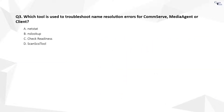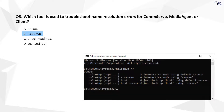Question 3. The correct answer is B. NSLOOKUP is a network administration command-line tool for querying the DNS to obtain the mapping between domain name and IP address.